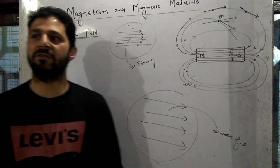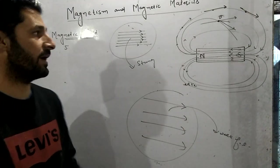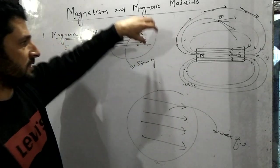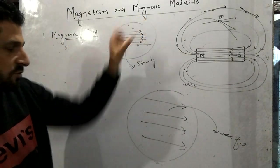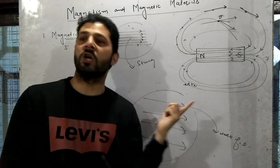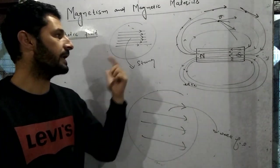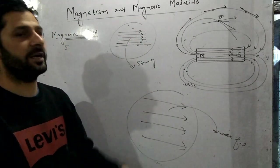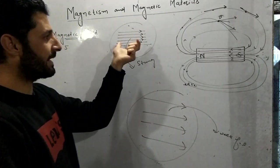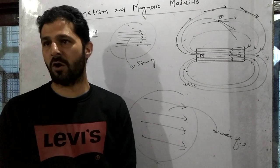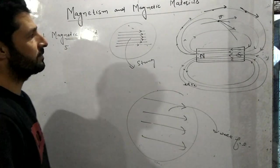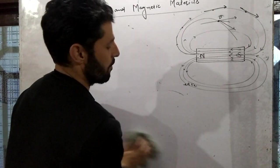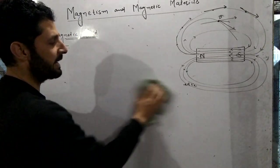Another property: the density of magnetic field lines represents the strength of the field. Where there is high density of field lines, the field is strong; where there is low density, the field is weak. Parallel and equidistant field lines represent a uniform field. High density means strong field; low density means weak field.